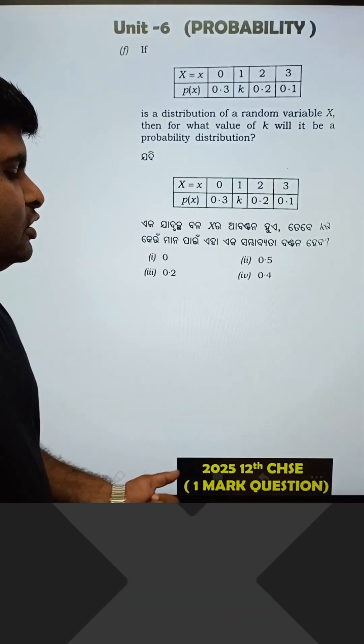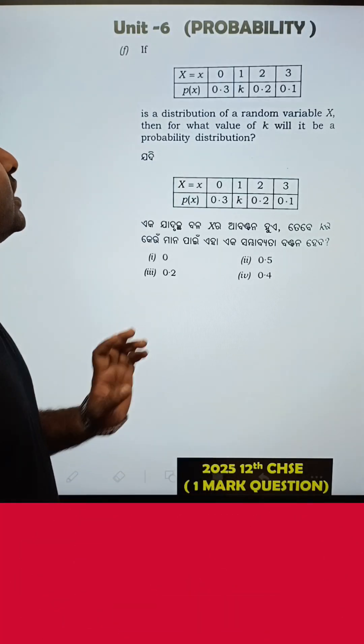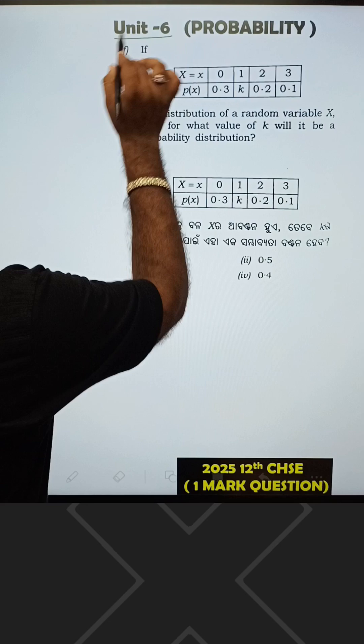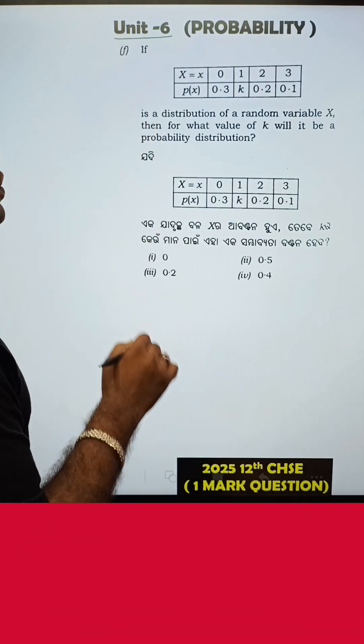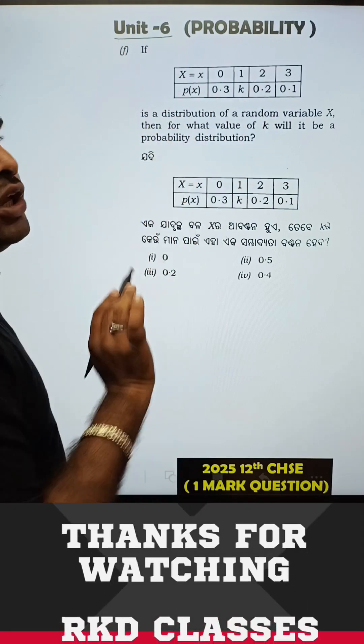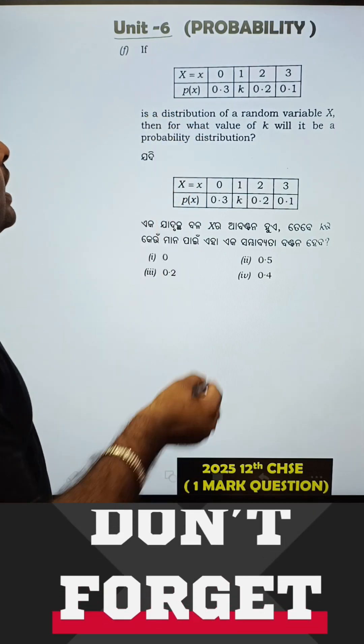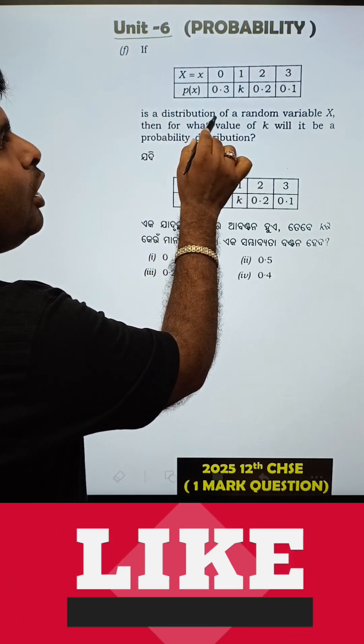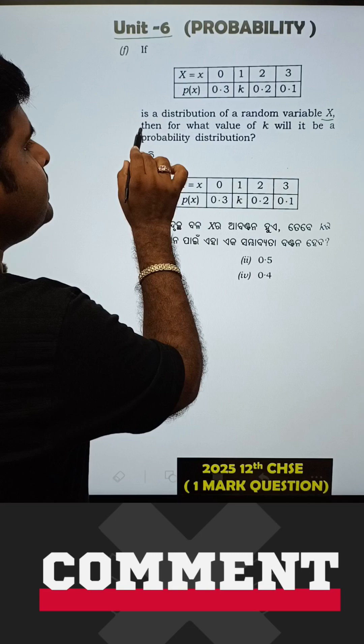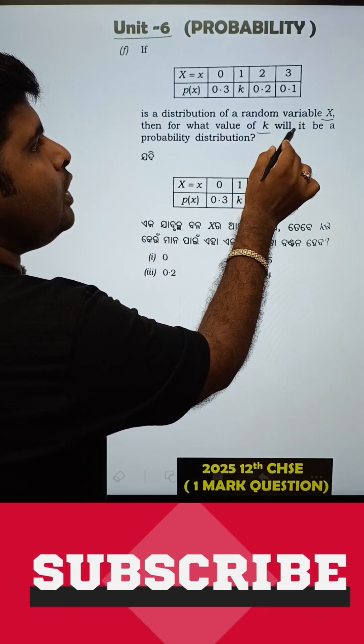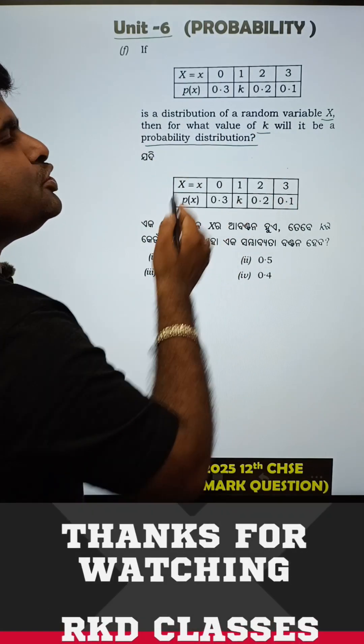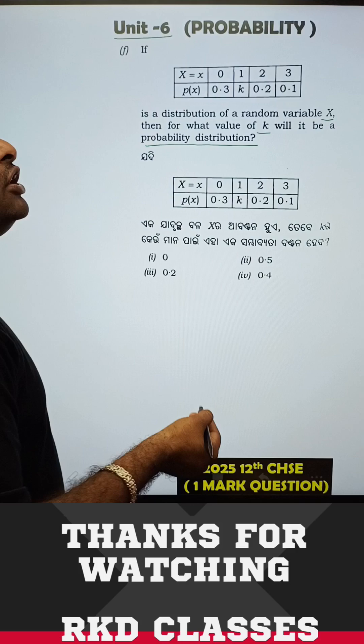Hello students, if you have asked the probability of 2025, you will have a question about probability. You need Unit 6, so if you have a question, if you have a table given, you have an X value, P of X given, is a distribution of a random variable X. Then for what value of K will it be a probability distribution?